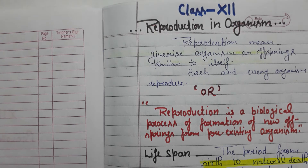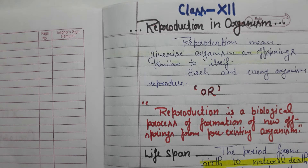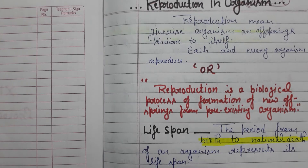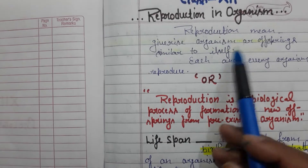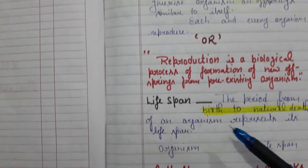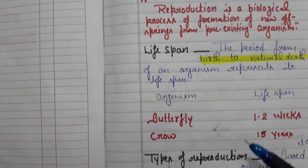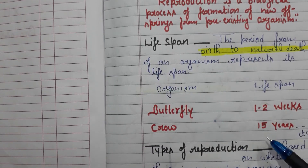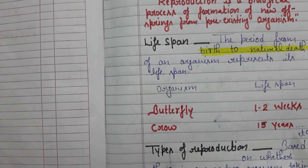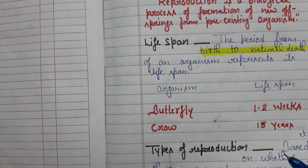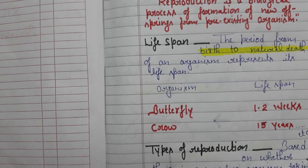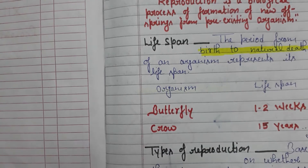Let's start our next topic which is from reproduction in organisms. I have already told you about what is reproduction, what is life span — it will be different in different organisms. Like butterfly: 1-2 weeks, crop: 15 years, crocodile: 60 years.